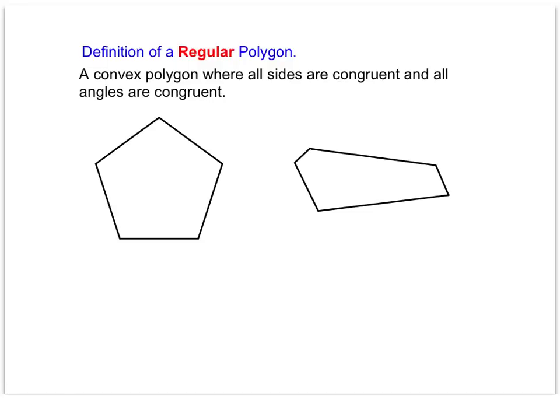This video covers one interior angle of a regular polygon. We start out by talking about the definition of a regular polygon, just to refresh. A regular polygon is a convex polygon where all sides are congruent and all angles are congruent.